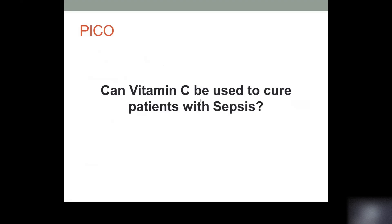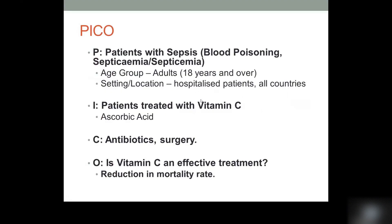Let's now take a look at an example with the following question: Can vitamin C be used to cure patients with sepsis? For the population we've noted patients with sepsis, and in brackets I've put blood poisoning and the different spellings for septicemia as alternate terms to search for. The age group are adults aged 18 and over, and the setting is hospitalised patients from all countries. The intervention is patients being treated with vitamin C, with ascorbic acid noted as an alternate term. For the comparison we've put standard care, which includes antibiotics and surgery. For the outcome we want to know if it's an effective treatment and whether it reduces the mortality rate.